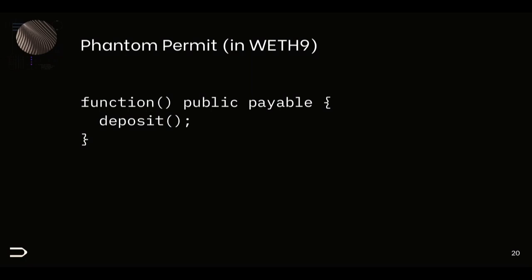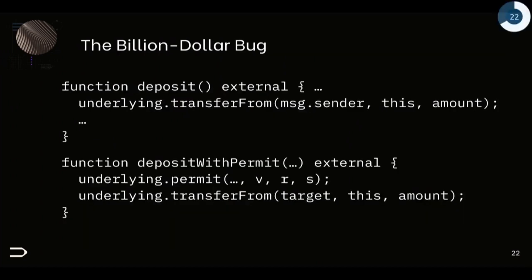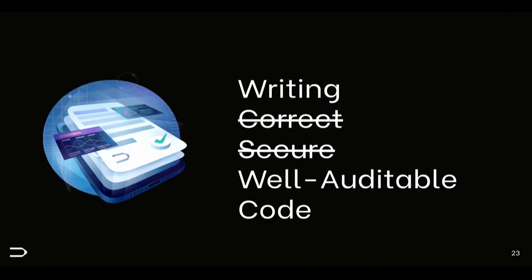The phantom functions bug is this: what is the permit function for WETH9, the wrapped Ether contract? It doesn't have the word 'permit' anywhere. WETH9 supports a permit call just because it has a catch-all fallback function to receive Ether — and when it receives Ether it just deposits it locally. So the contract accepts a call to 'permit' without ever defining one — that's a phantom function. The attack works because permit is a no-op on WETH9, and then transferFrom can drain anyone who previously approved the deposit function.